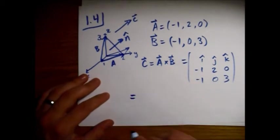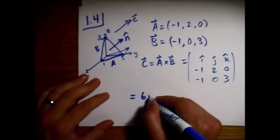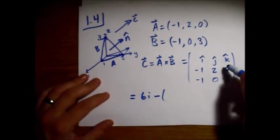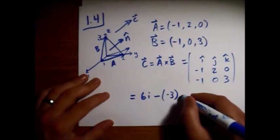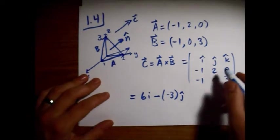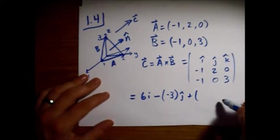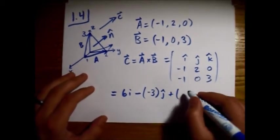And I get, so 6i minus—so minus three and the j, and a plus the two.